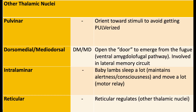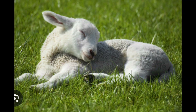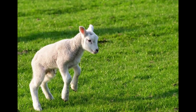The intralaminar nuclei have two main functions: maintaining alertness and consciousness, and serving as a motor relay for the basal ganglia and cerebellum. I remember this by thinking about lambs — intralaminar makes me think of lambs, which are baby sheep. Baby sheep sleep a lot because they're babies, and they move a lot when they are awake, just like human babies.